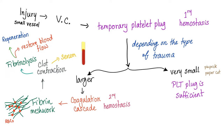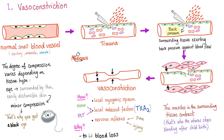Fibrinolysis restores the blood flow and destroys the clot, then regeneration. First step is vasoconstriction: trauma occurs, then the surrounding tissue exerts a back pressure. The muscles surrounding the injury contract, forcing the vessel to constrict. The vasoconstriction itself is a local myogenic spasm, independent of any nerves. Local autocoid factors and some nervous reflexes will help, but the process itself is myogenic — like the heart, it has automaticity. The vagus can slow it down, the sympathetic fibers can speed it up, but the heart itself is autonomous. Same concept.